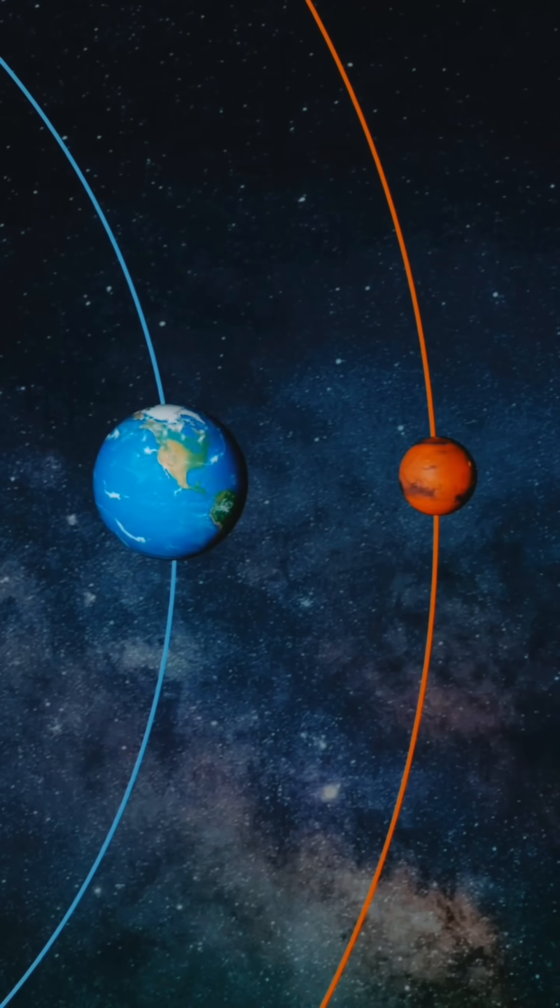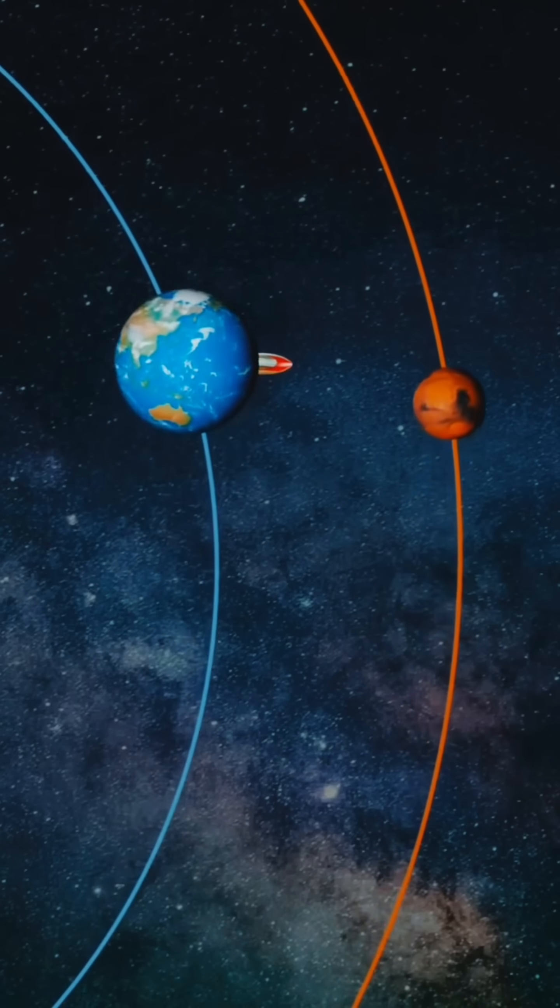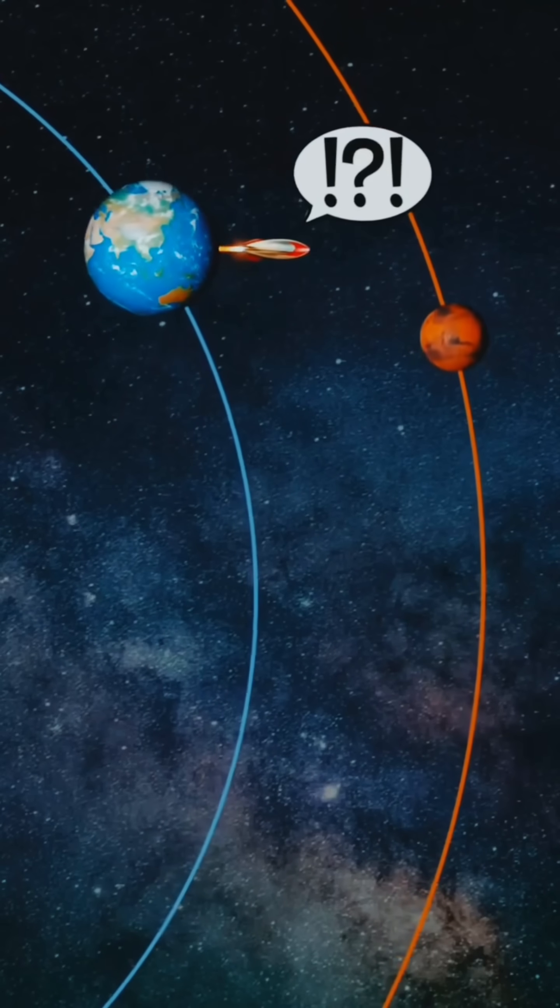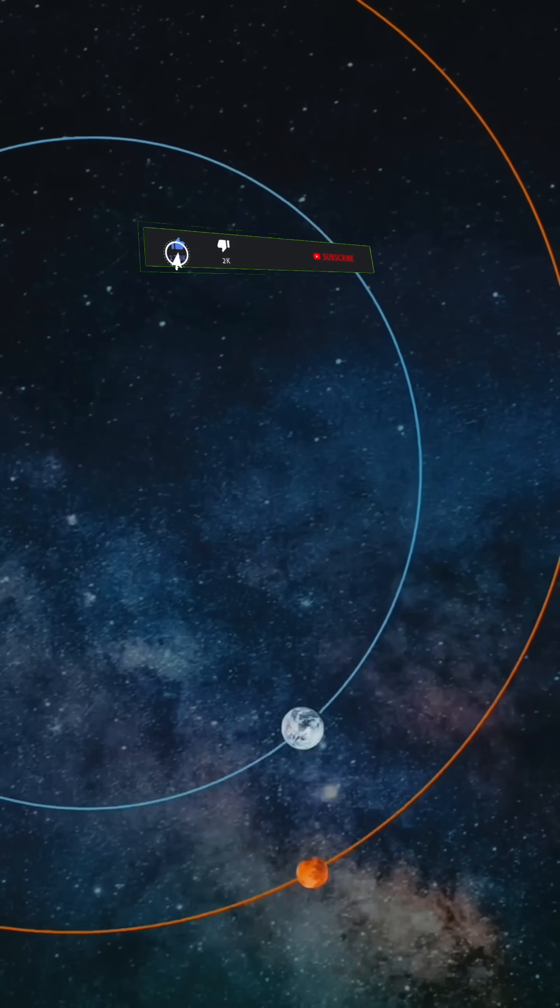In that case, you might think that the fastest way to cross that distance would be a straight line from A to B. However, given that the planets are not static and the large distance between them with our current technology, such an approach is impractical.